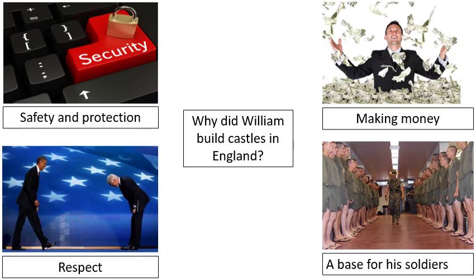Moving over to the right-hand side, we have making money. The castle was filled with soldiers or knights who were responsible for collecting taxes in the local area, so it was a good way for William to make money and ensure his taxes were paid. Then we've got respect - he would get a lot of respect from all the castles he built. It was a good way to show his power, which was a reason why people built castles and why William built so many.